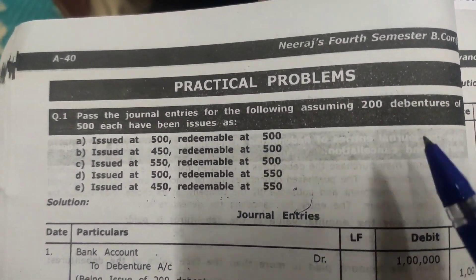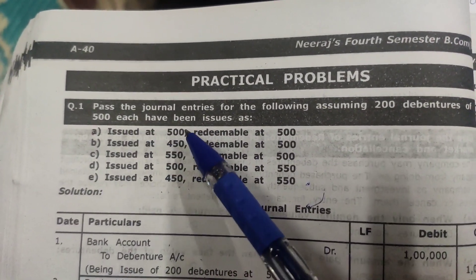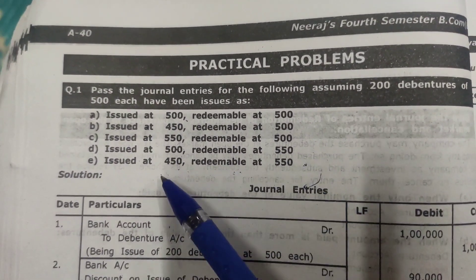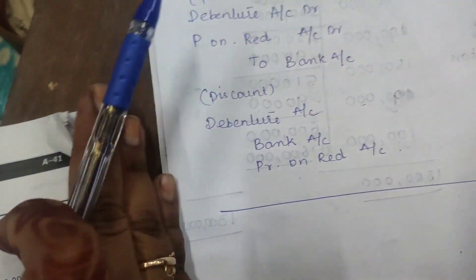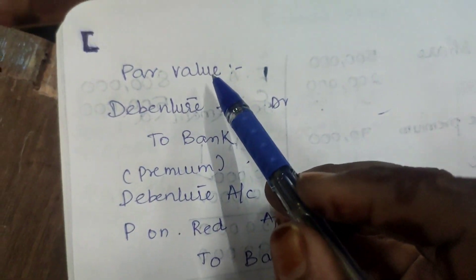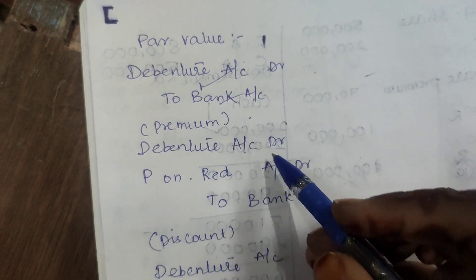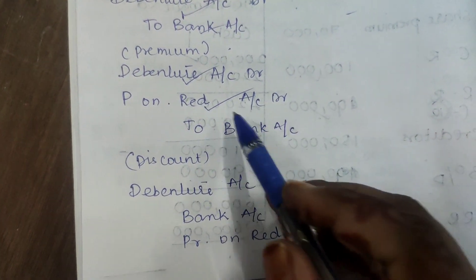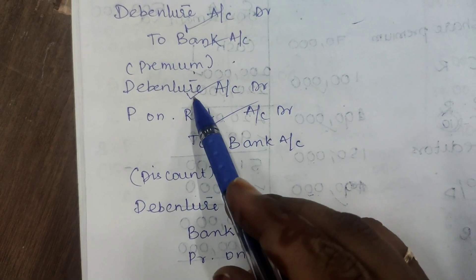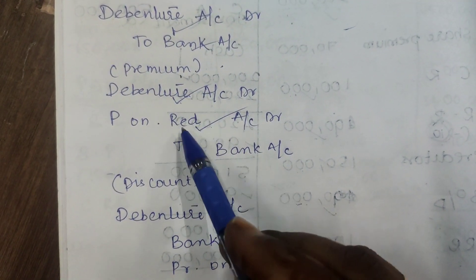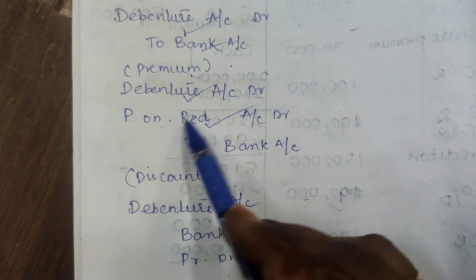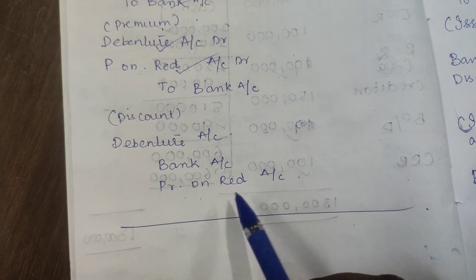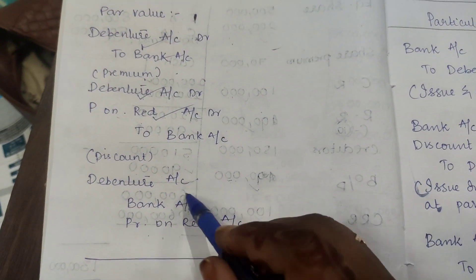The question gives journal entries for 200 debentures of 500 each, issued at 500 and redeemed at 500, covering scenarios of par, discount, and premium. When paying face value to face value, the entry is Debenture Account Dr. to Bank Account. When issuing at premium, the premium is on the credit side: Debenture Account Dr. to Premium on Redemption Account.